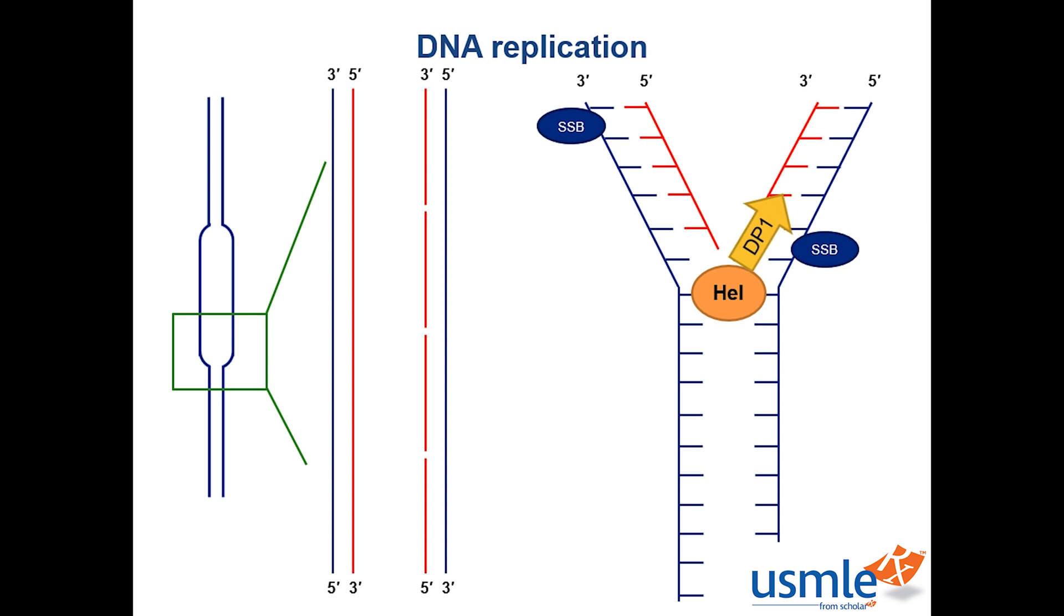After the lagging strand has been a continuous stretch of alternating RNA primers and Okazaki fragments, the only thing left is for a different polymerase, which is DNA polymerase 1, to remove the RNA primer using its 5' to 3' exonuclease activity, and it then fills in the gap with DNA as it goes. Polymerase 1 has the same synthesis and exonuclease functionality and polarity as polymerase 3, but has the added ability to remove RNA primers.